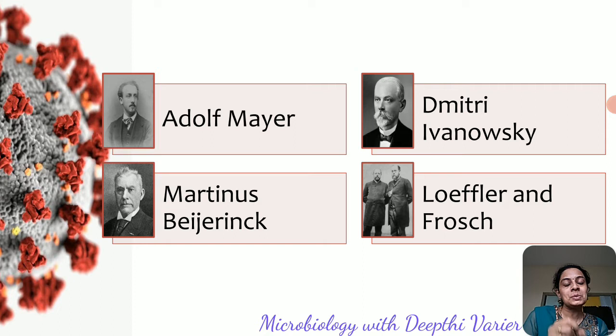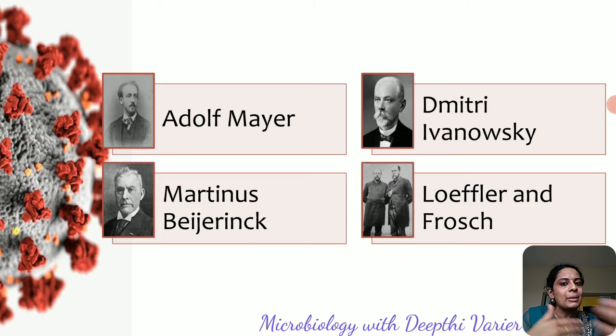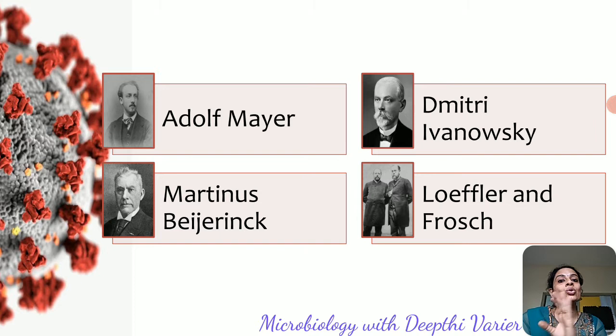Beijerinck termed this agent 'contagium vivum fluida,' which translates as 'soluble living germ.' We now know it is not a liquid causing the infection but actually a particulate matter. According to Beijerinck, the agent causing tobacco mosaic disease was a liquid form and was unable to replicate outside living cells — it needed a living cell to grow. So he assumed viruses were liquid in nature, but this was still a very important conclusion.